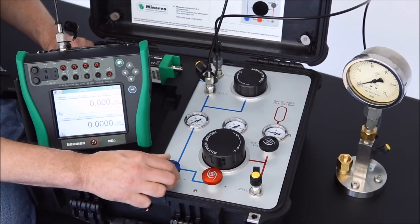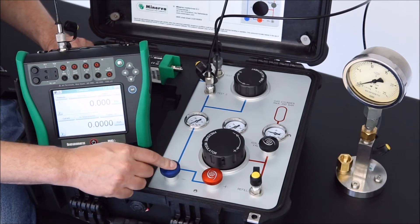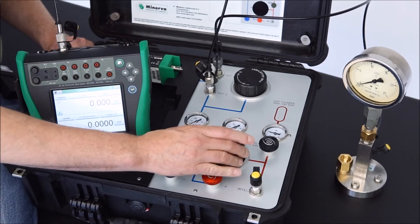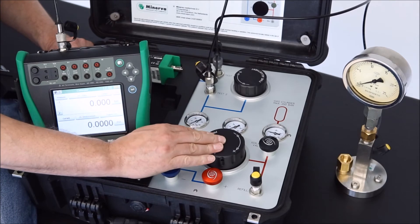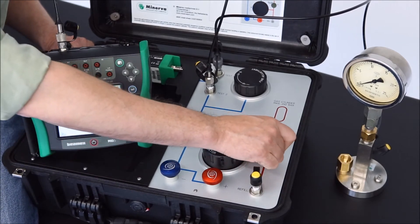The up valve is still closed. The down valve is still open. I rotate my pressure regulator fully counterclockwise and now it is safe to open my isolation valve.